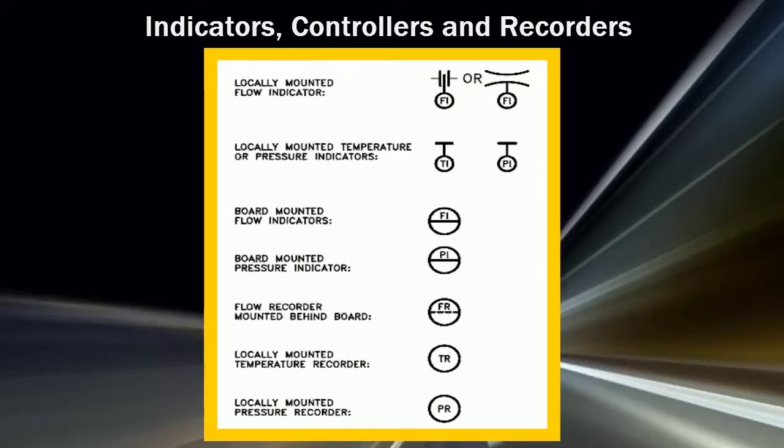Indicators, controllers, and recorders are instruments that convert the signal generated by an instrument loop into a readable form. The indicator or recorder may be locally or board mounted, and like modifiers and transmitters, this information is indicated by the type of symbol used. This slide provides examples of the symbols used for indicators and recorders and how their location is denoted.